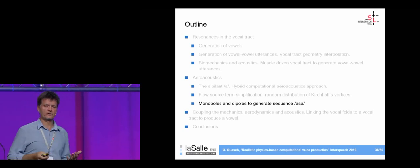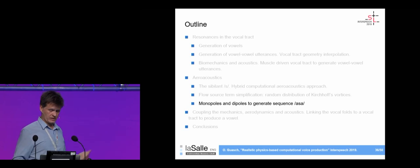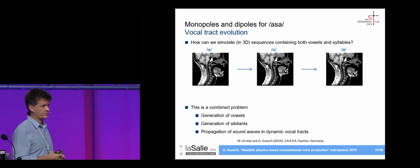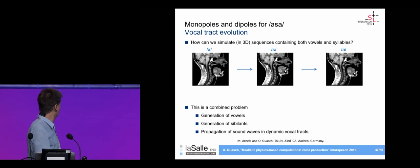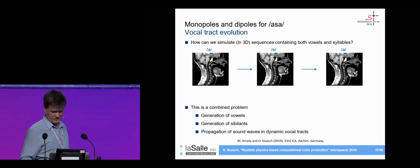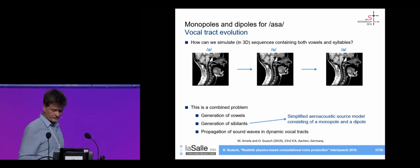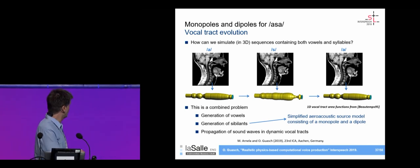We would also like to compute more complex sound sequences like 'asa'. To test this, we first adopted a simpler option inspired by one-dimensional approaches. We now need to transition from the geometry of /a/ to that of /s/ and back to /a/, generating both vowels and sibilants at the right times. We use a very simplified aeroacoustic source model: instead of a distribution of quadrupoles, we use a single monopole and a single dipole, with simple vocal tract shapes for /a/, /s/, and /a/ again.